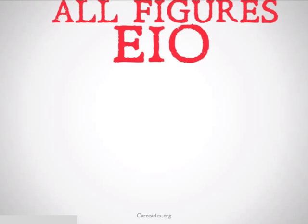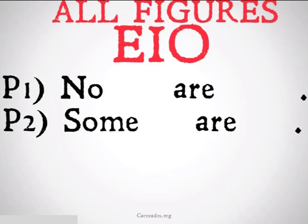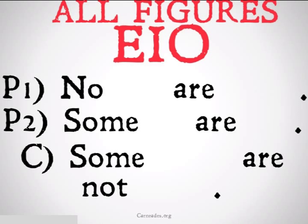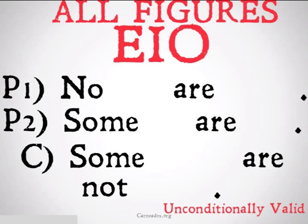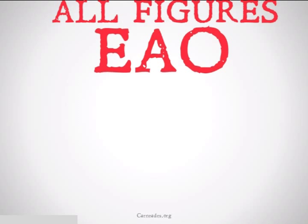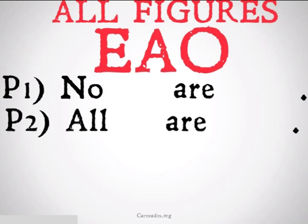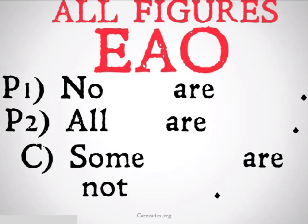It's interesting to note that EIO is going to be valid for all figures. So if you stick in any arrangement of middle, subject, and predicate, that will work — that's going to be unconditionally valid. Similarly, EAO is going to be conditionally valid for any figure.